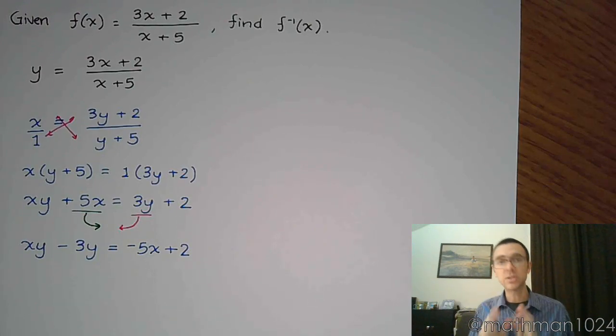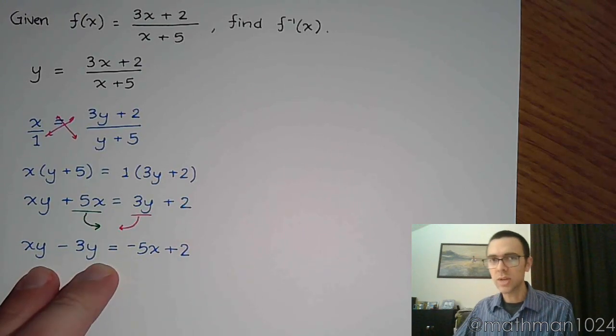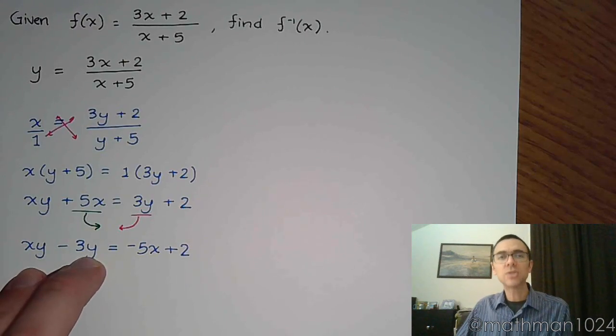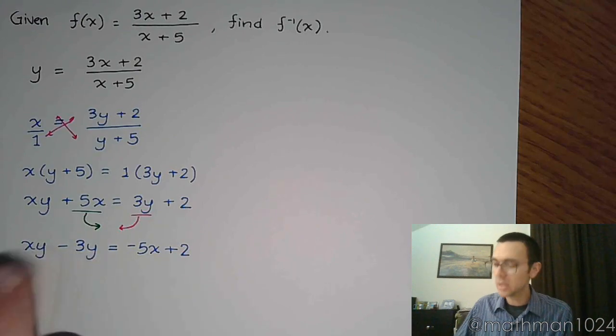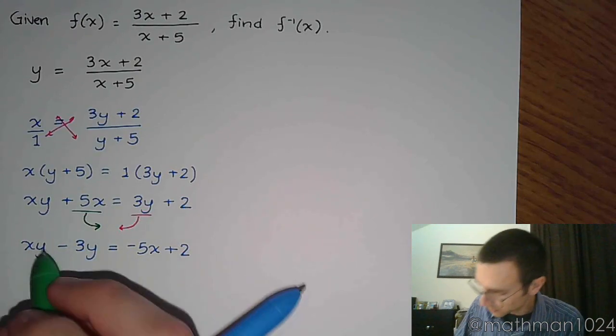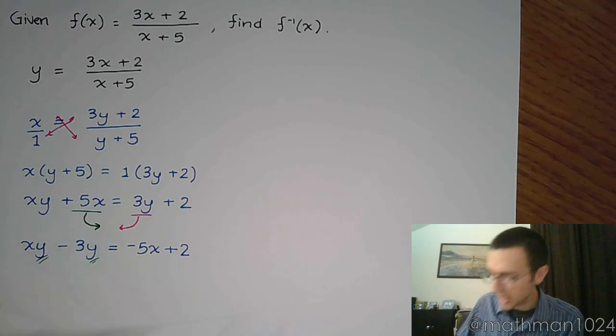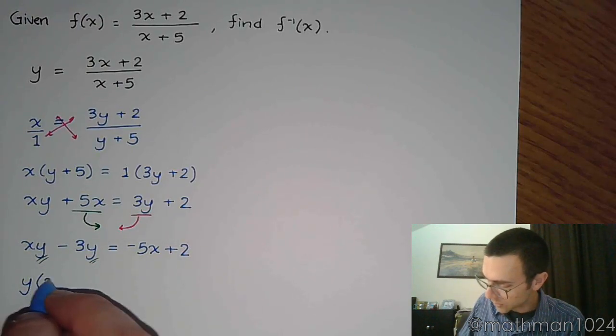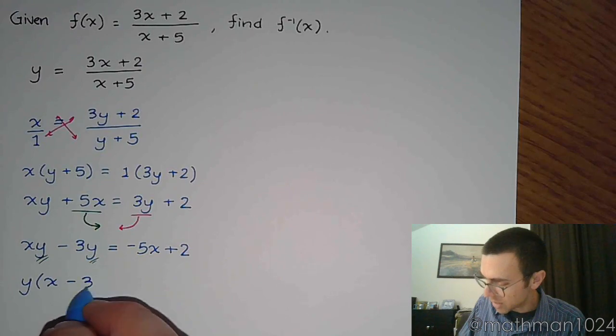So now here's the trick. Pay attention to this trick, because we're going to be seeing this at the very end of the semester. We need to get all the y's together. And the reason we wanted all the y's together is so that I can factor out that common factor, which happens to be y. So there's a y here and here, so we factor out the y, and we're left with x - 3.